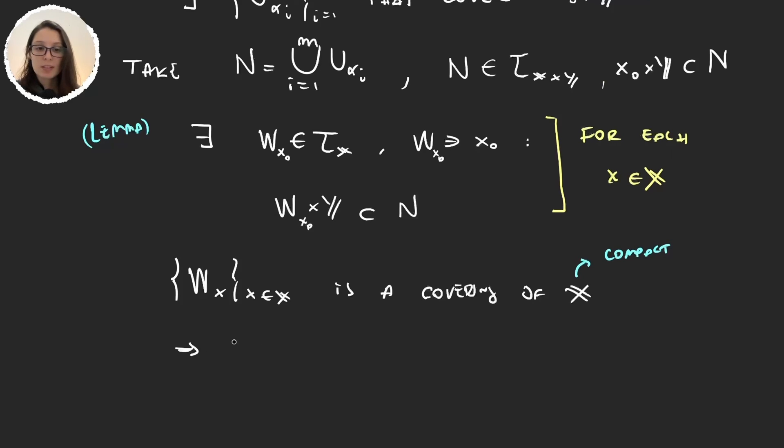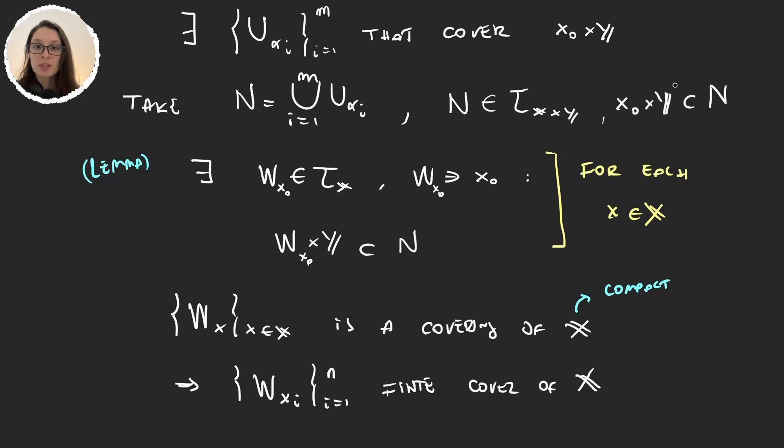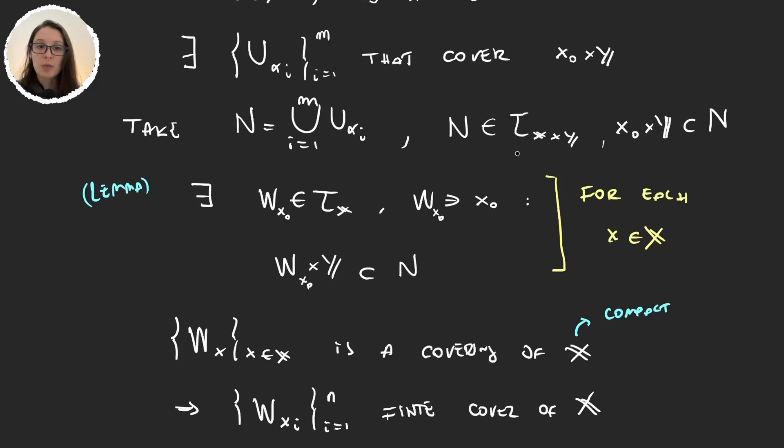So then there exists a finite amount that covers X, and all the tubes W_{x_i} times Y will be contained in N, and each of those tubes is also covered by a finite amount of elements.